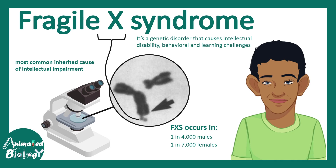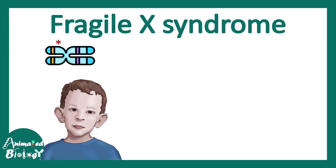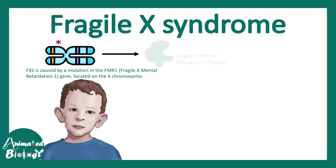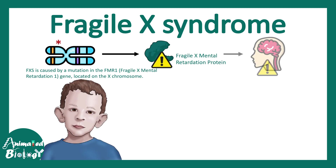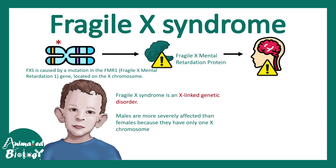Fragile X Syndrome is the most common inherited cause of intellectual impairment just after Down Syndrome. It occurs due to a mutation in the gene that leads to production of the FMR1 protein, located on the X chromosome. Normally, the Fragile X Mental Retardation Protein is produced from this gene, but due to a mutation there is an abrogation of this protein production. Since this protein is important for brain activity, its absence alters normal brain function, leading to mental retardation and social problems.